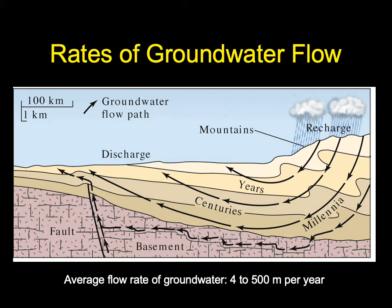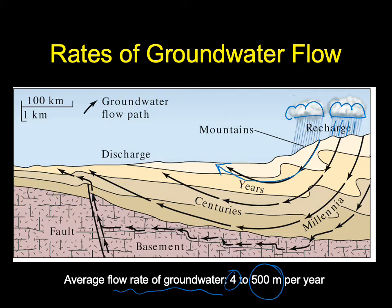Groundwater flow rates are significantly variable — they can range from 4 meters a year to 500 meters a year. You can have the recycling of groundwater happen very quickly, moving half a kilometer in a year, or some water can sink down and move as slowly as 4 meters per year — roughly 12 feet. This slow movement means the change in hydraulic head doesn't happen very rapidly either.